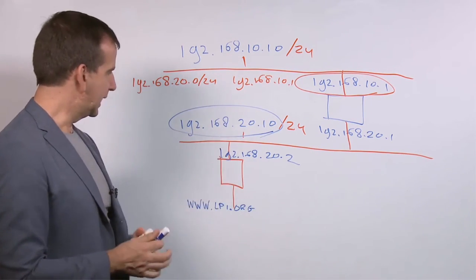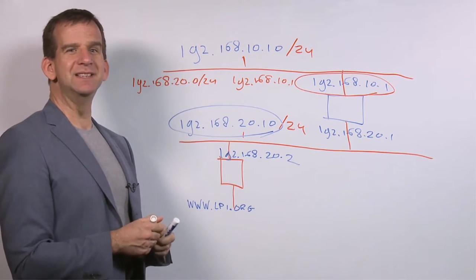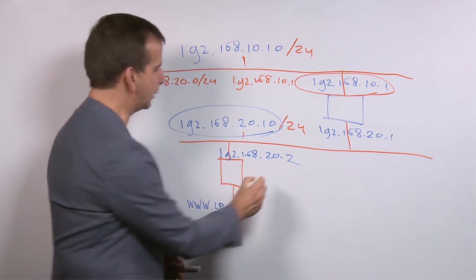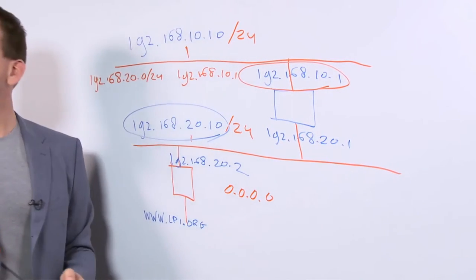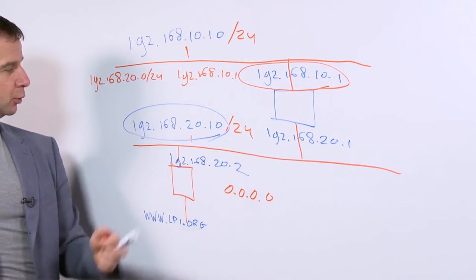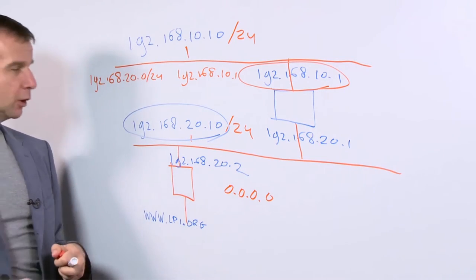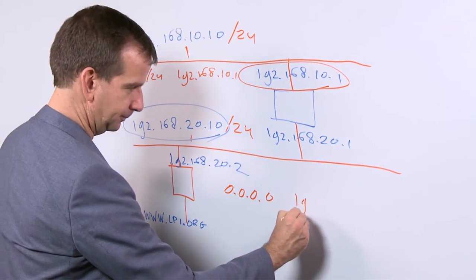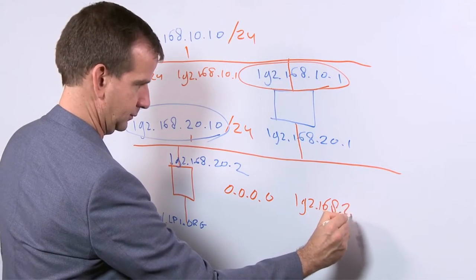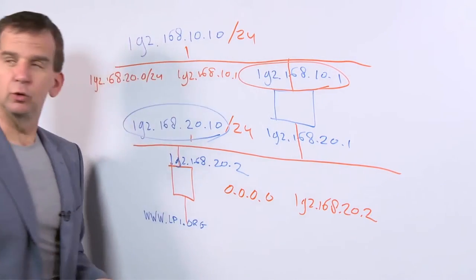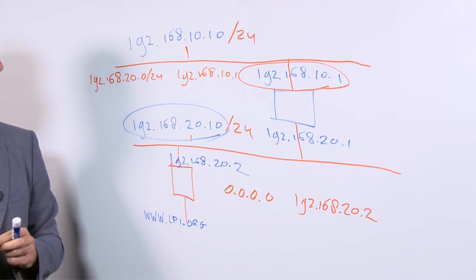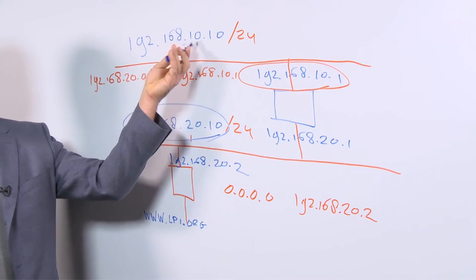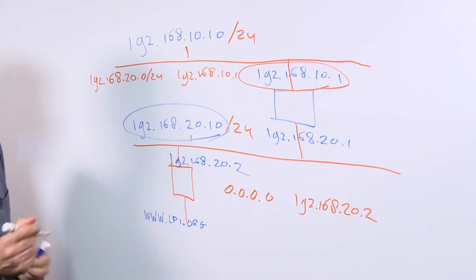Well, for this computer, you would need to specify a default route. The default route can be written as 0.0.0.0. And you can tell the computer that 0.0.0.0 must be forwarded to the 192.168.20.2 IP address. And in order to reach this network, another route needs to be added.